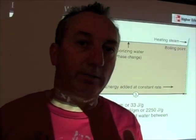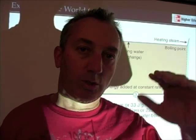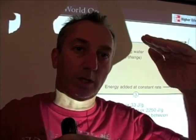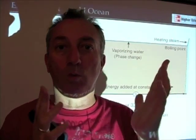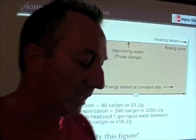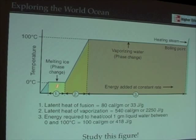Think about this for a moment. To go from 0 degrees Celsius to 100 degrees Celsius — from the freezing point of water to the boiling point of water — takes 100 calories for one gram of water. Here we're looking at 80 calories just to change the state, to change this solid to a liquid. It's an amazing amount of energy. But the story gets even more amazing.